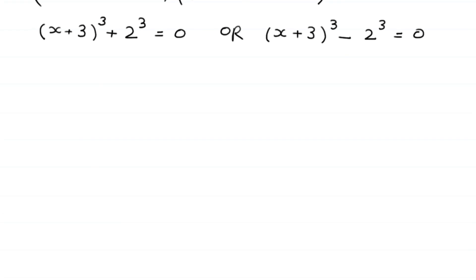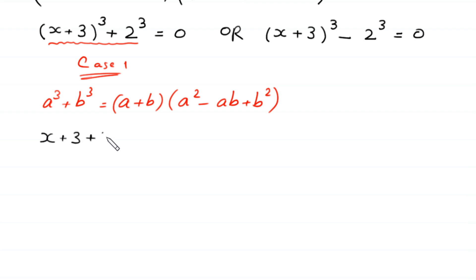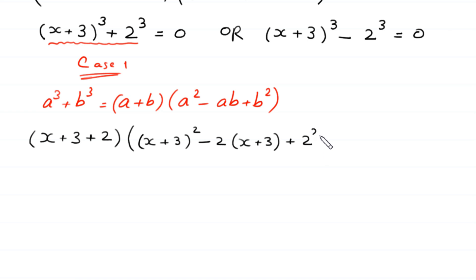We have two cases. Let's solve Case 1: (x + 3)³ + 2³ = 0. By using the algebraic identity a³ + b³ = (a + b)(a² − ab + b²), this becomes (x + 3 + 2) times [(x + 3)² − 2(x + 3) + 2²] = 0.